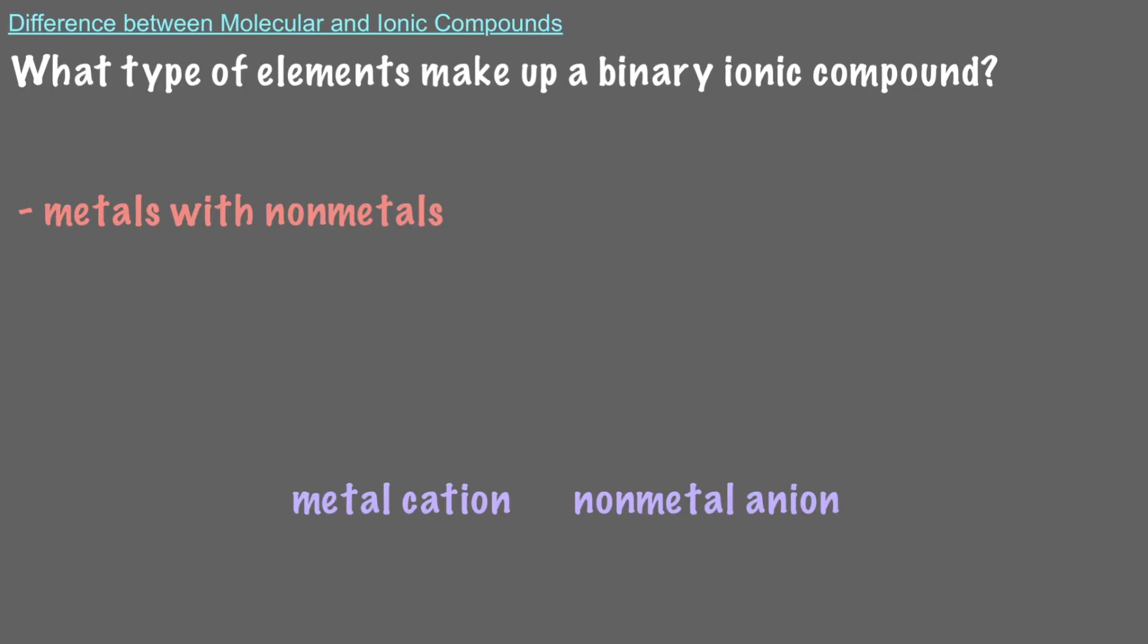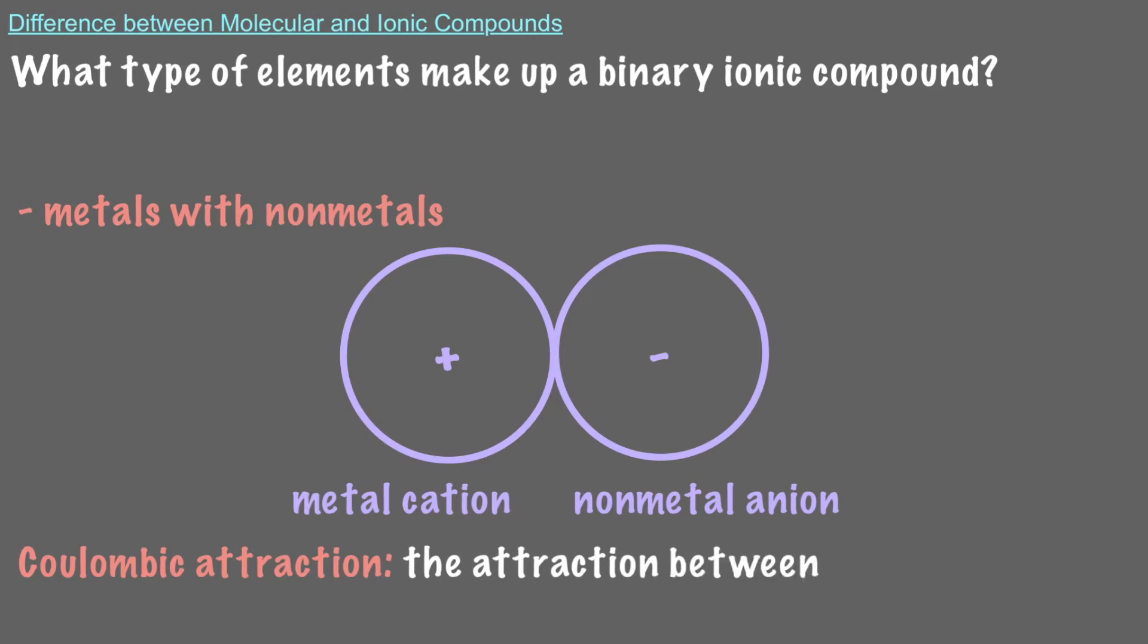That means an ionic compound is made up of ions with opposite charges. Therefore, the force that holds ionic compounds together is the coulombic attraction, the attraction between oppositely charged objects. The negative charges of the anions attract the positive charges of the cations and vice versa.